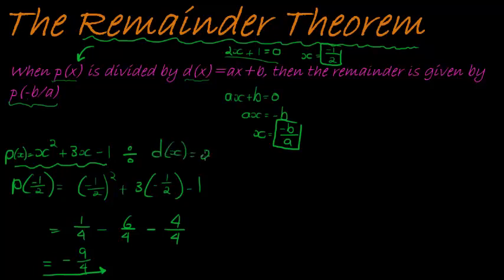This answer that I get is the remainder of when I take my polynomial and I divide it with my divisor. If my divisor is 2x minus 1 in this case, that will be my remainder. Okay, so this is a very quick way of finding my remainder.